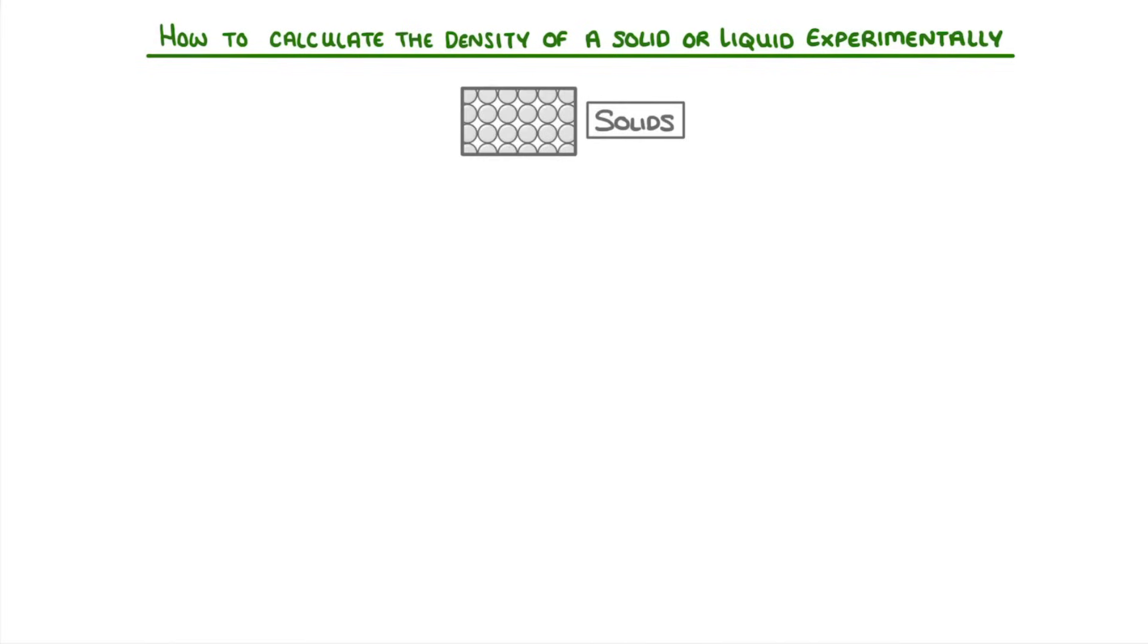The next thing we need to look at is how to calculate the density of a solid or a liquid experimentally. Let's start with solids. If we think back to our equation, we can see that in order to find the density, we're first going to have to find the mass and the volume of our object.